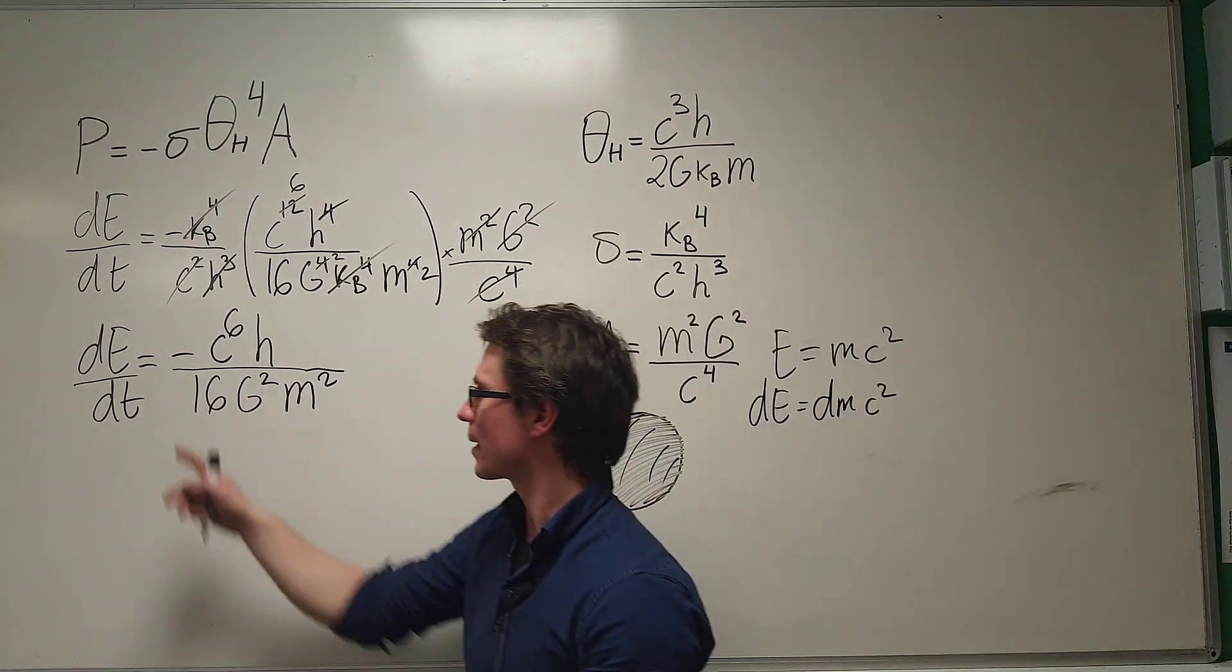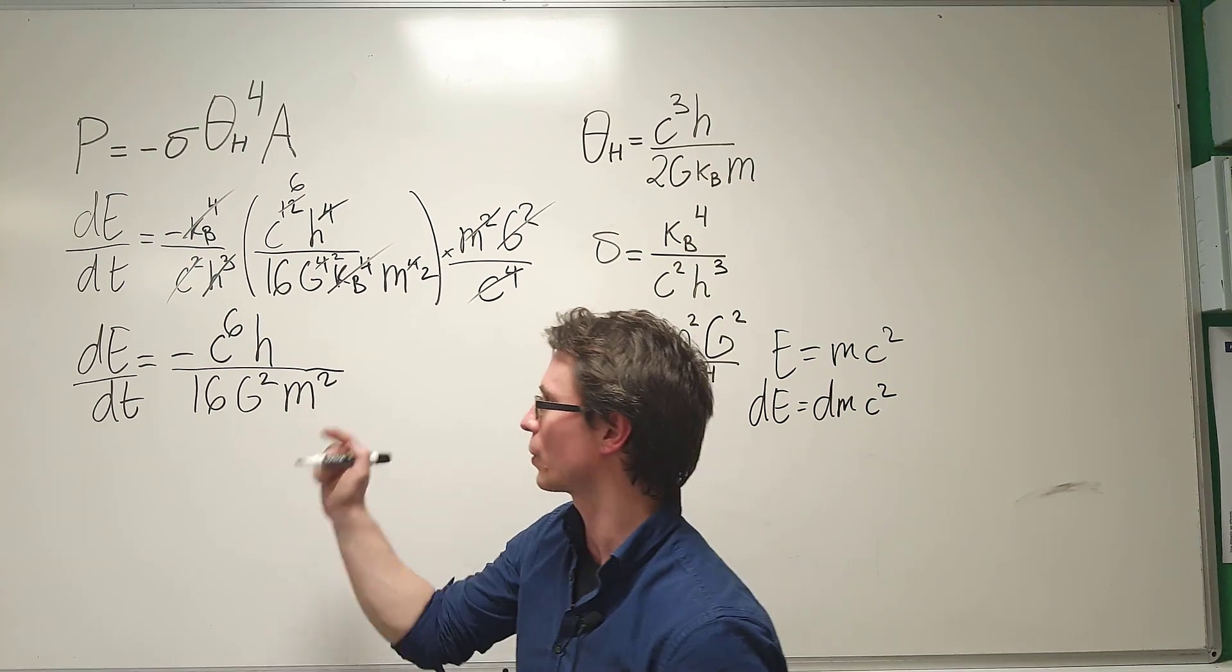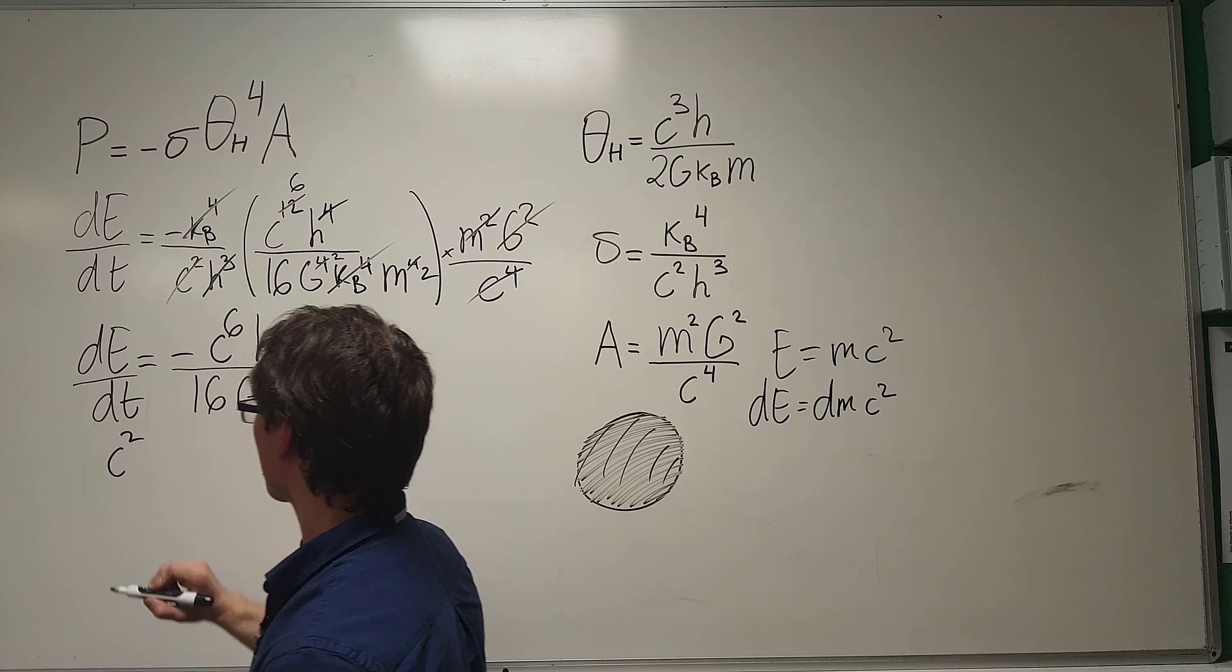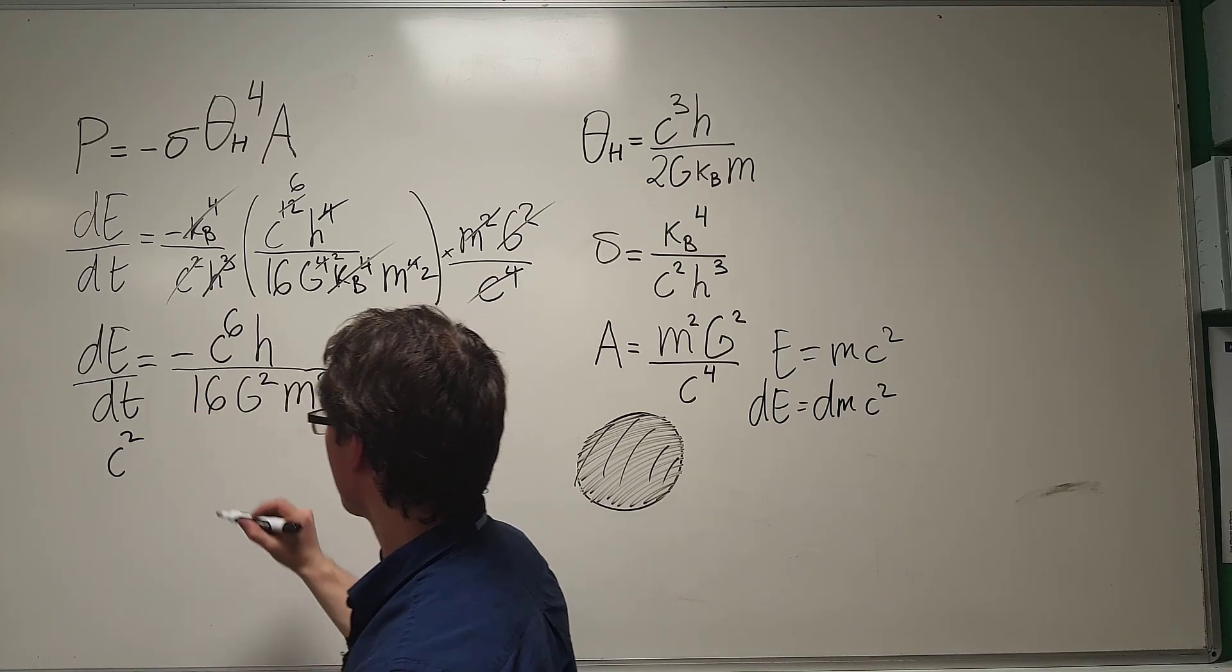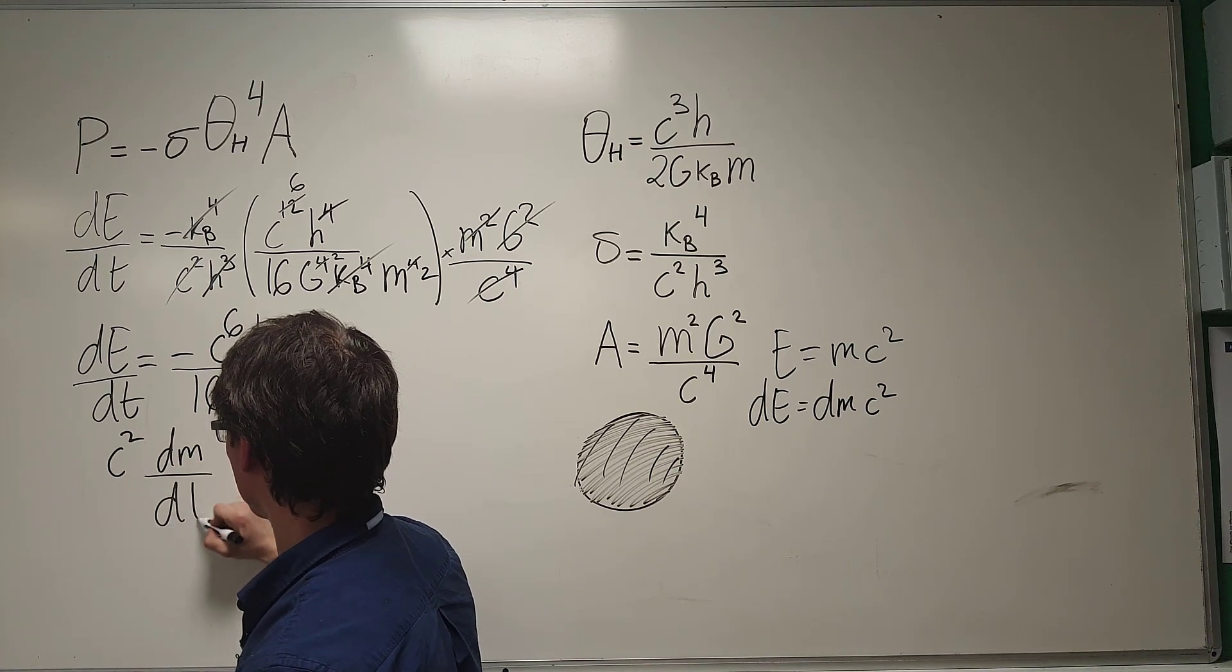So, if you were to differentiate that with respect to time, C squared is the speed of light, which is just a constant, so I can just take that outside of the derivative. What I'm going to be left with is C squared, and then I'm going to have dM by dt.